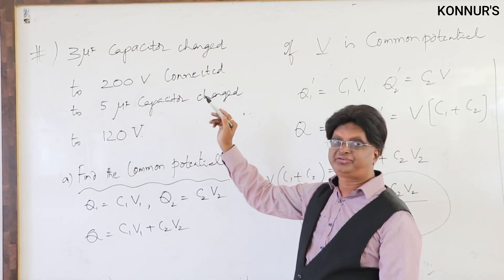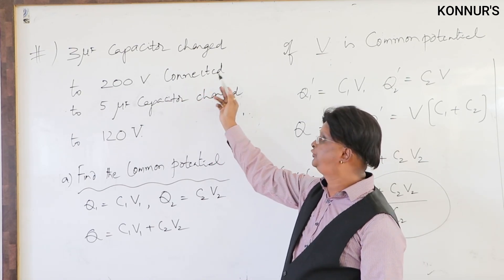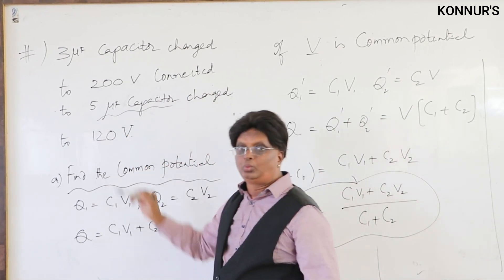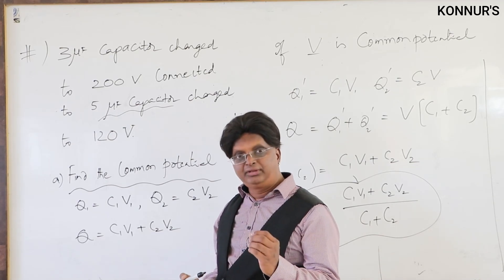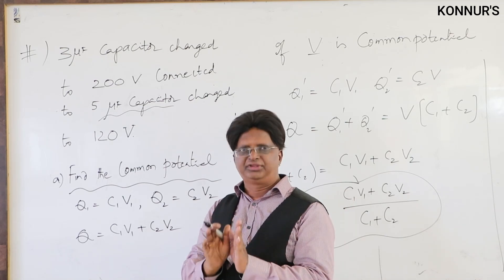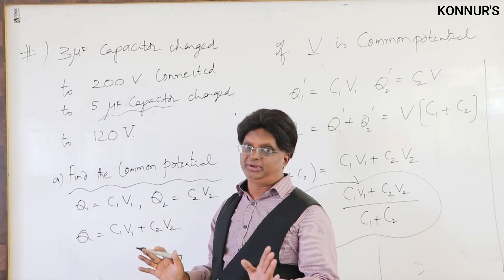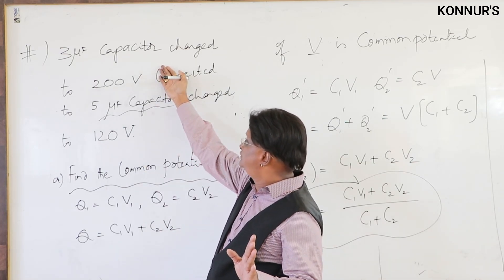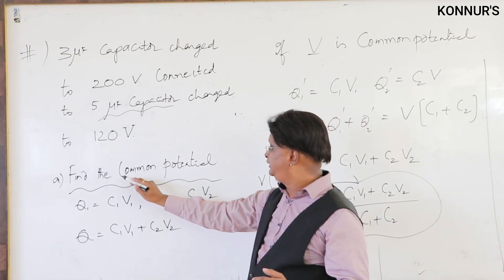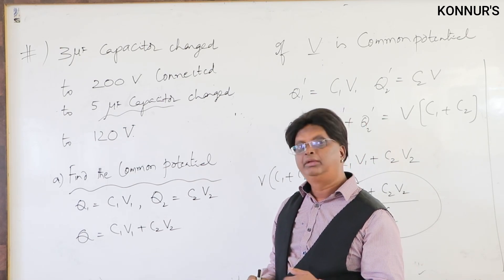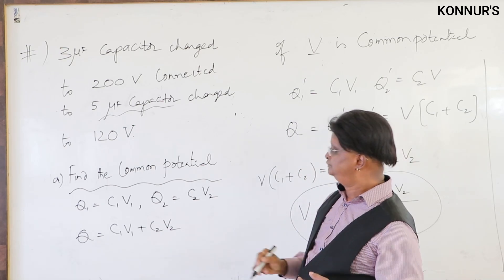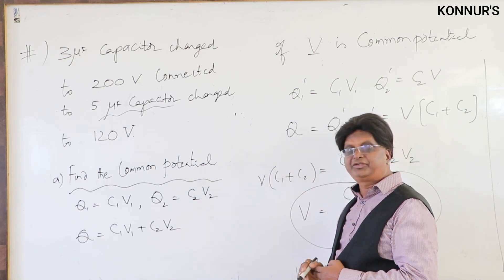Example 10: A 3 microfarad capacitor charged to 200 volts is connected to a 5 microfarad capacitor charged to 120 volts. Find the common potential. When two charged capacitors are connected, charge flows from the higher potential to the lower potential until both reach a common potential.